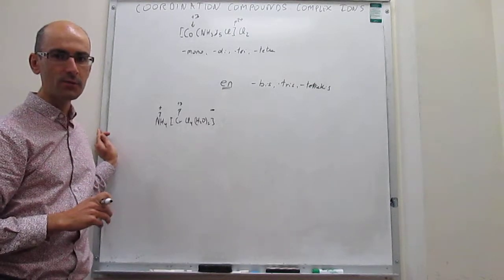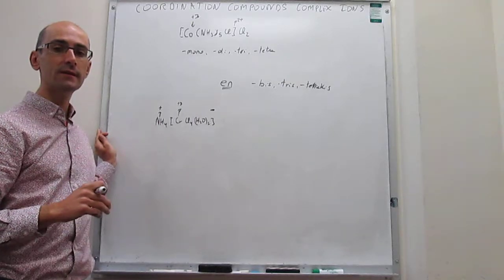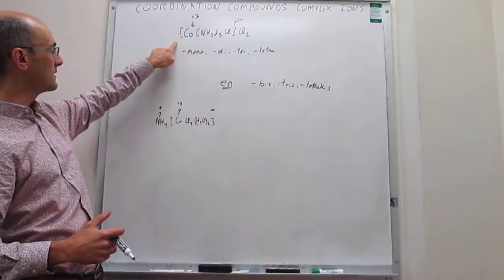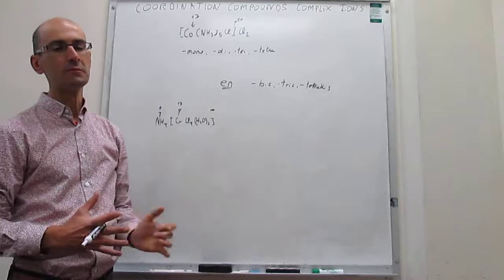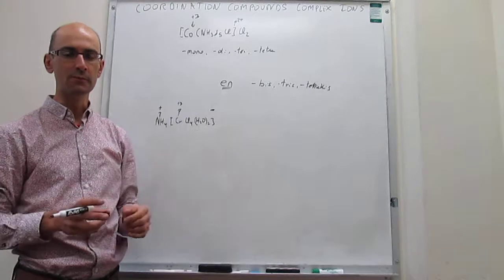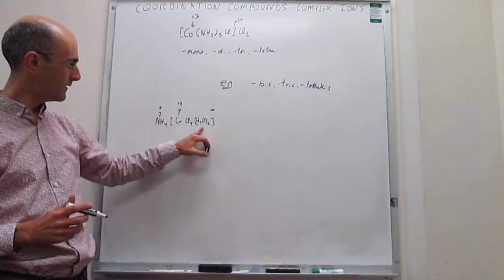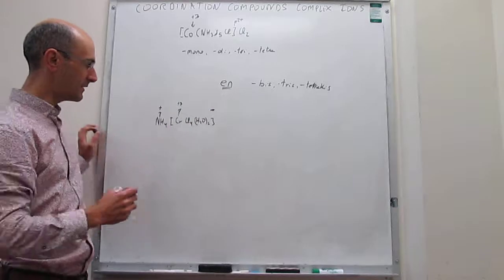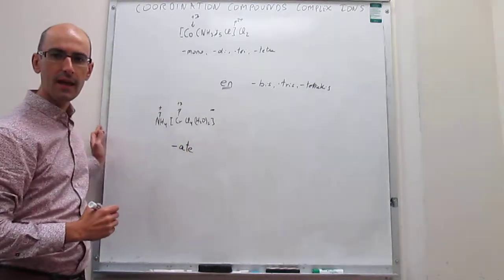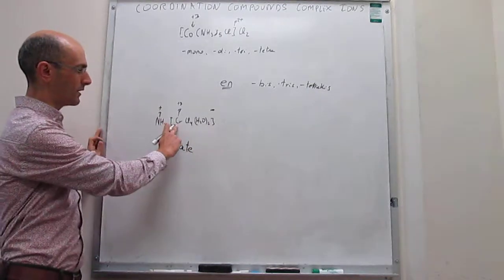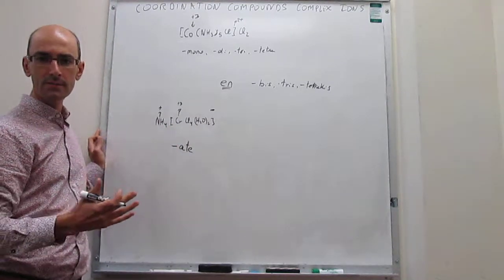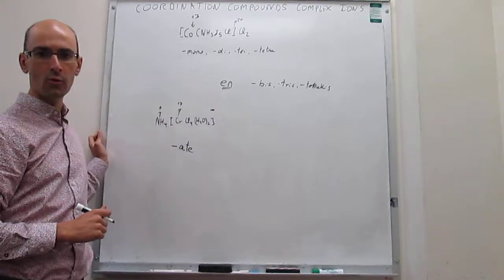When naming the metal, it matters whether the complex ion is positive or negative. If the complex ion is positive, you simply use the name of the metal followed by the charge in Roman numerals between parentheses. If the complex ion is an anion, you add the suffix -ate to the end of the metal name — so chromium becomes chromate, and cobalt in a negative ion would be cobaltate.